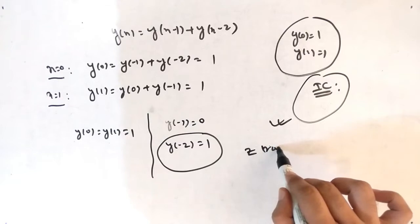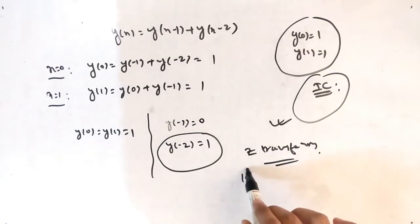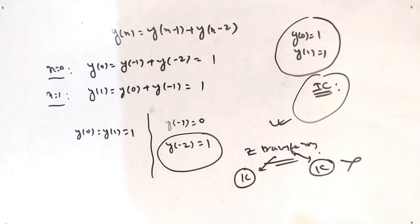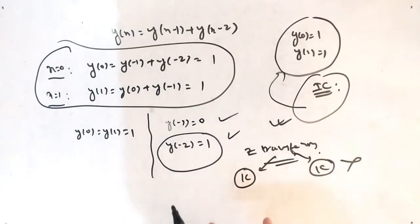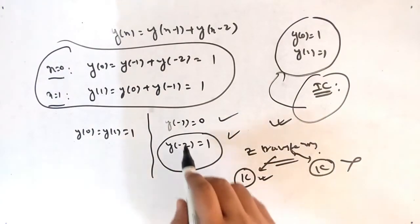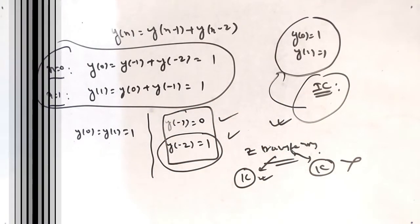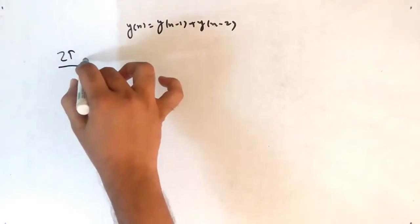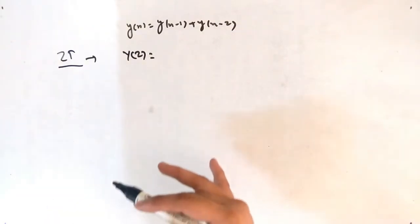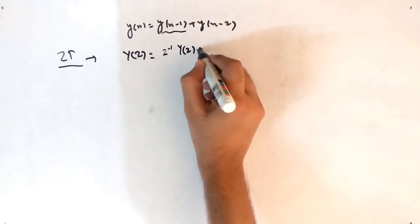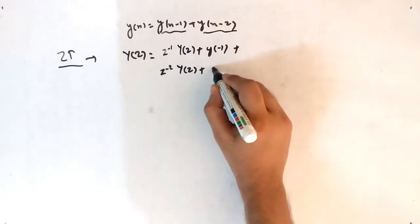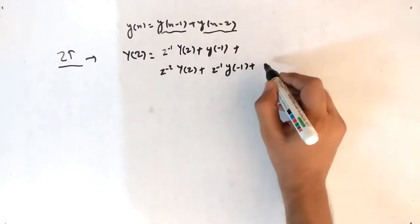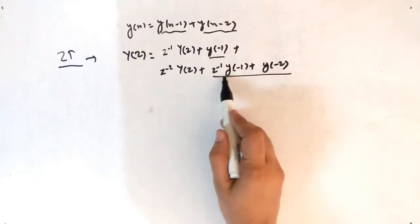In the Z-transform there are two types: with initial condition and without initial condition. Since this question has initial conditions, we apply the initial condition formula. Taking the Z-transform of y[n] = y[n-1] + y[n-2], we get: Y(Z) = Z⁻¹·Y(Z) + Y(-1)  +  Z⁻²·Y(Z) + Z⁻¹·Y(-1) + Y(-2). The underlined extra terms appear because we are using the initial condition formula.